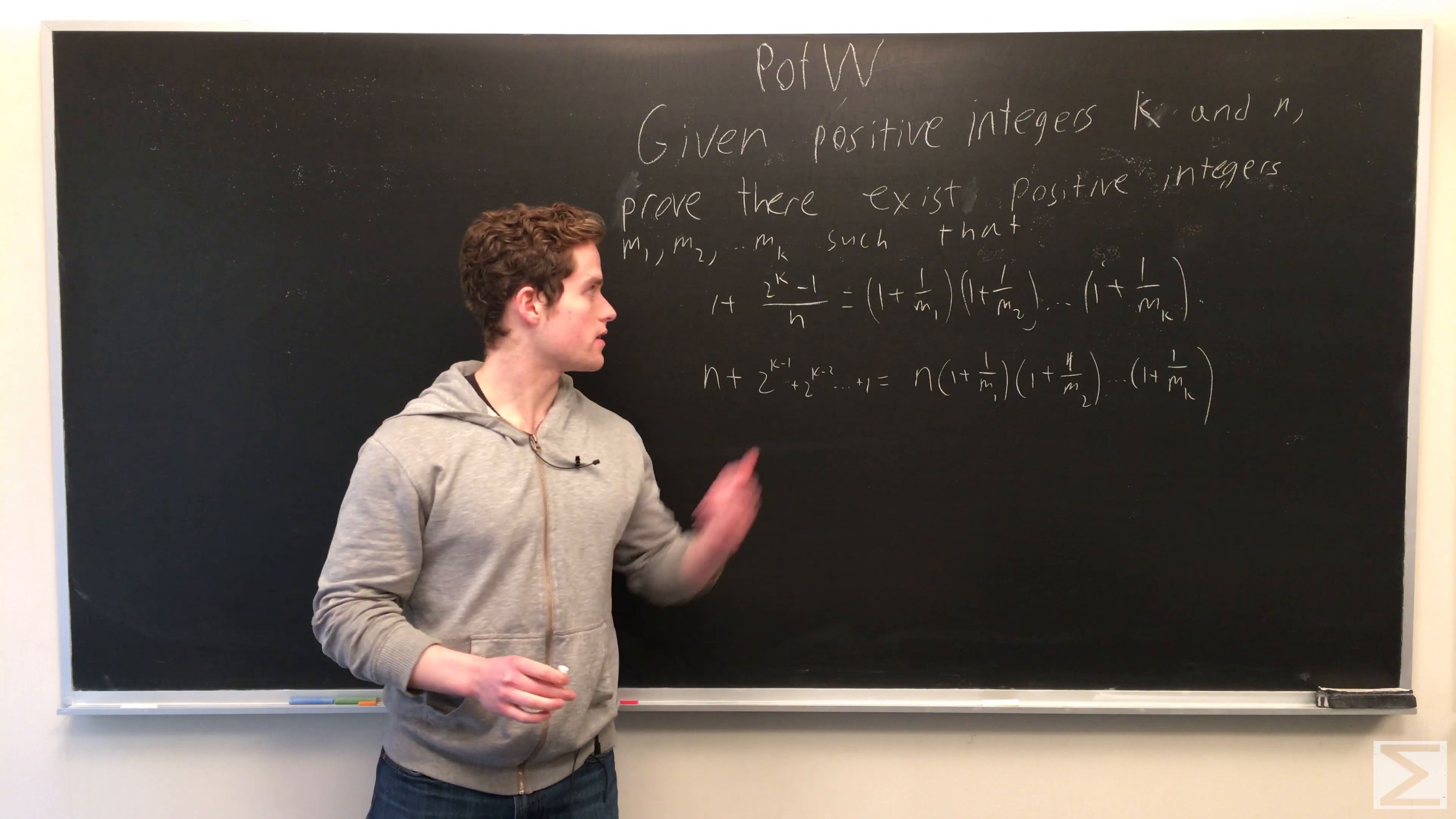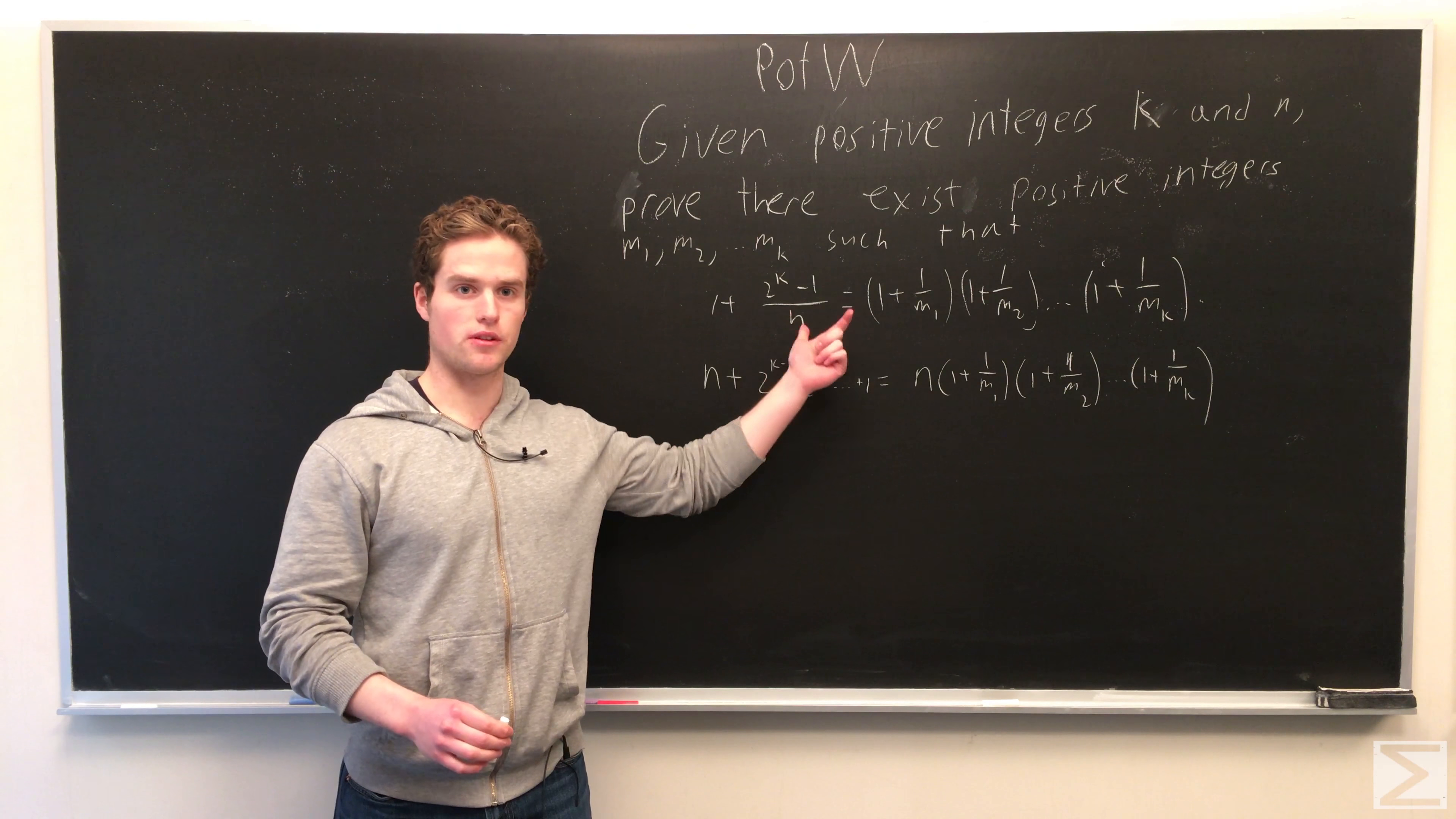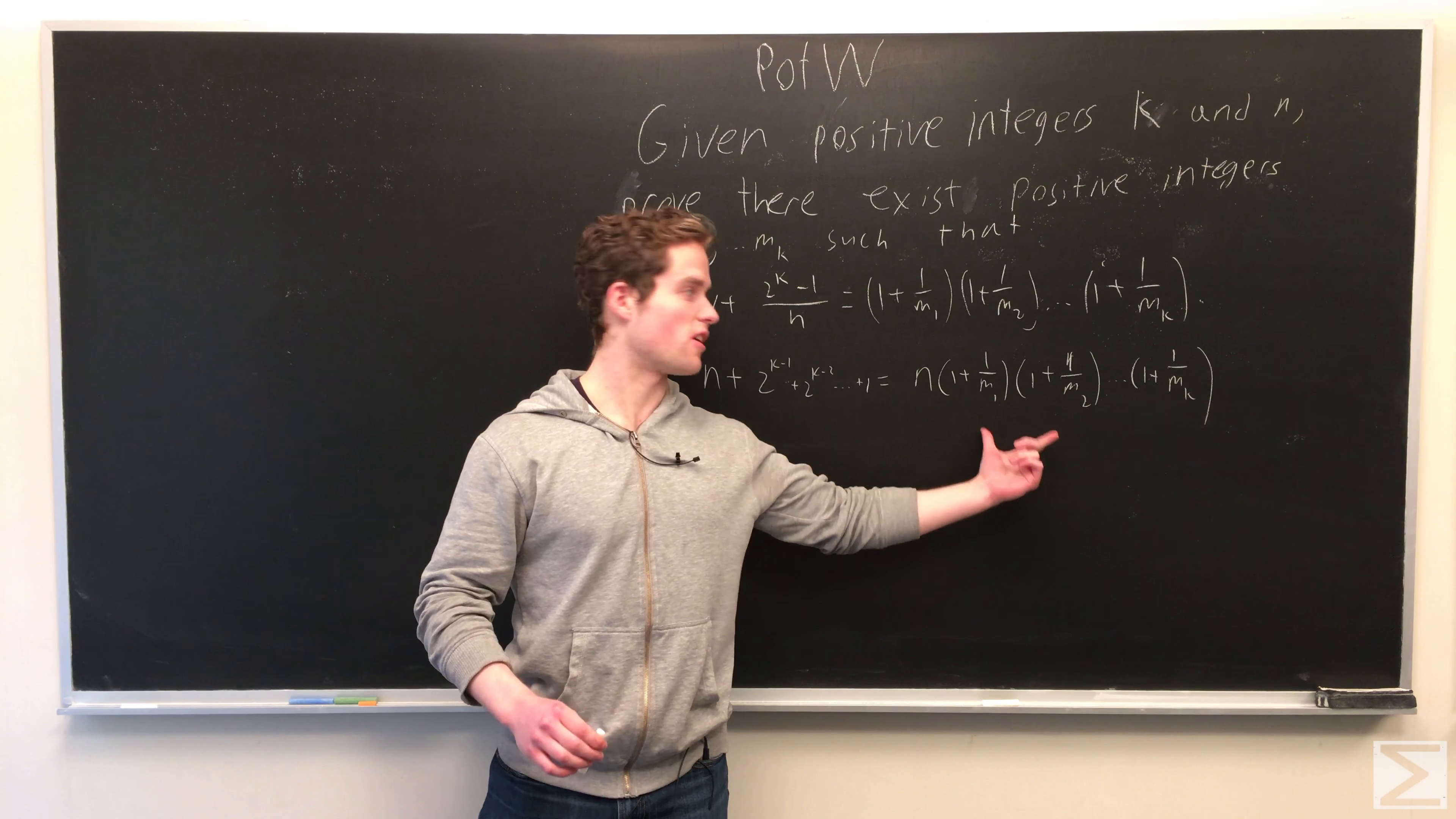So multiplying by n and expanding out 2k minus 1, we see this is equivalent to wanting n plus 2 to the k minus 1 plus 2 to the k minus 2, dot dot dot, plus 1 equals n times this product on the right here.